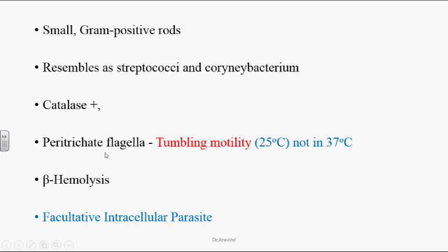They have peritrichate flagella at room temperatures up to 45 degrees centigrade and they show tumbling motility. Whereas at human body temperatures, they won't produce peritrichate flagella. These are beta-hemolytic organisms that show beta hemolysis on blood agar culture medium.